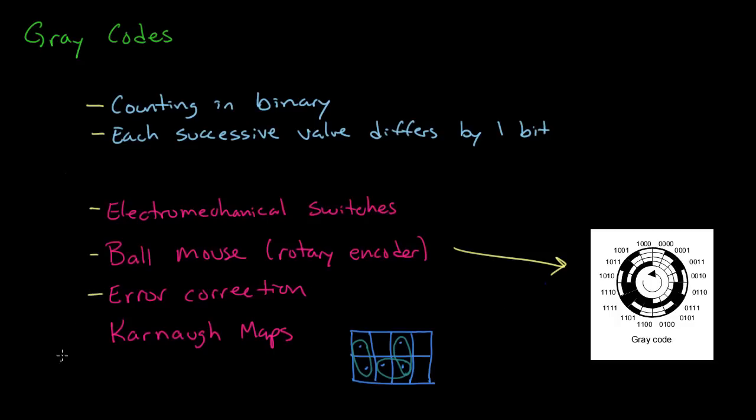Gray codes also come up in error correction in computer networks, and in computer science we use them for something called Karnaugh maps, which are used to simplify boolean expressions.